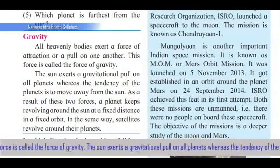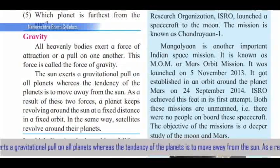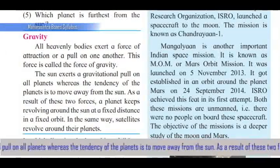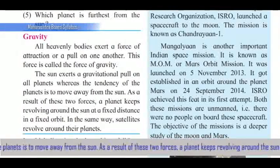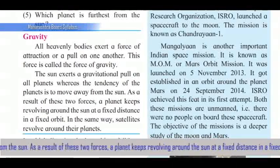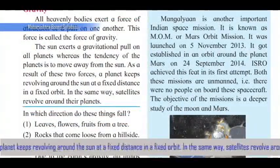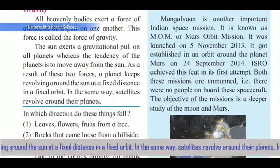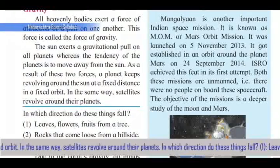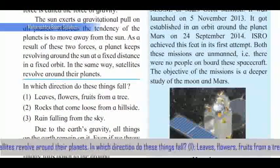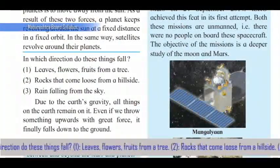Gravity: All heavenly bodies exert a force of attraction, or a pull, on one another. This force is called the force of gravity. The Sun exerts a gravitational pull on all planets, while the tendency of the planets is to move away from the Sun. As a result of these two forces, a planet keeps revolving around the Sun at a fixed distance in a fixed orbit. In the same way, satellites revolve around their planets.